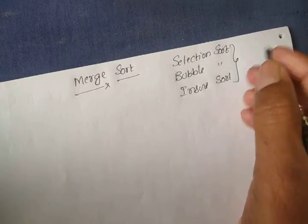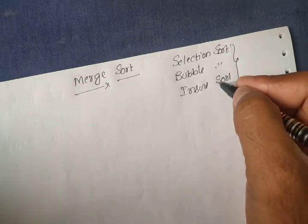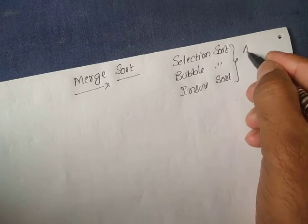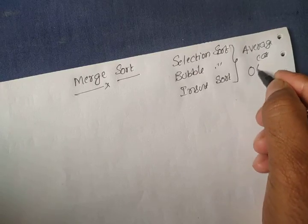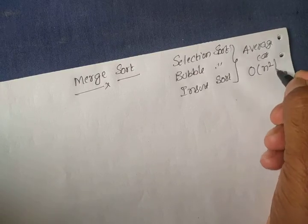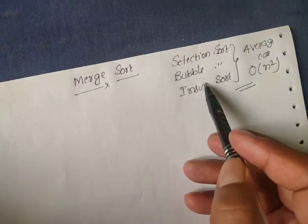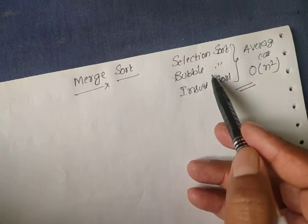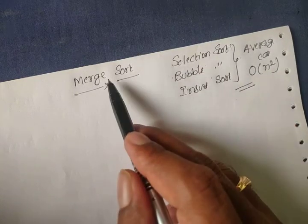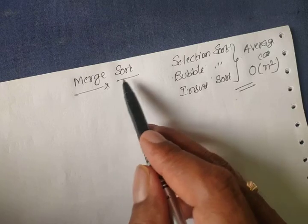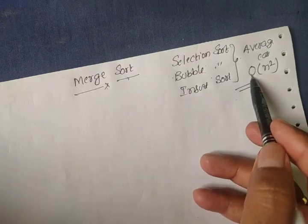We observed that for all of selection sort, bubble sort, and insertion sort, the average case time complexity is O(n²). That means it will take more time to complete the sorting technique. To reduce this time complexity, we now take the concept of merge sort.